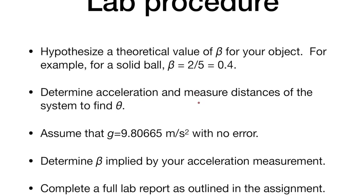As set up earlier, measure the distances of the system to find your theta. You can go ahead and assume that g is the standard value of g, 9.80665 meters per second squared. It has no associated error, and then you can use the beta determined by your acceleration measurement and compare that to your hypothesized value of beta.